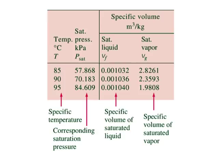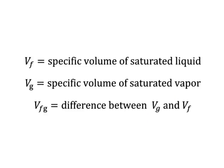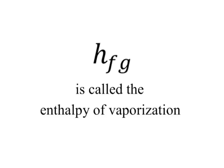Another subscript commonly used is FG, which denotes the difference between the saturated vapour and saturated liquid values of the same property. For example, VF is equal to specific volume of saturated liquid, VG is equal to specific volume of saturated vapour, and VFG is equal to the difference between VG and VF. The quantity HFG is called enthalpy of vaporisation or latent heat of vaporisation. It represents the amount of energy needed to vaporise a unit mass of saturated liquid at a given temperature or pressure. It decreases as the temperature or pressure increases and becomes zero at the critical point.